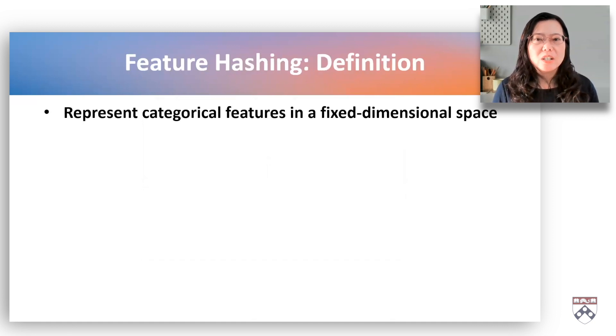Feature Hashing, also known as the hashing trick, is a technique used in machine learning and natural language processing to represent high cardinality categorical features in a fixed dimensional space.